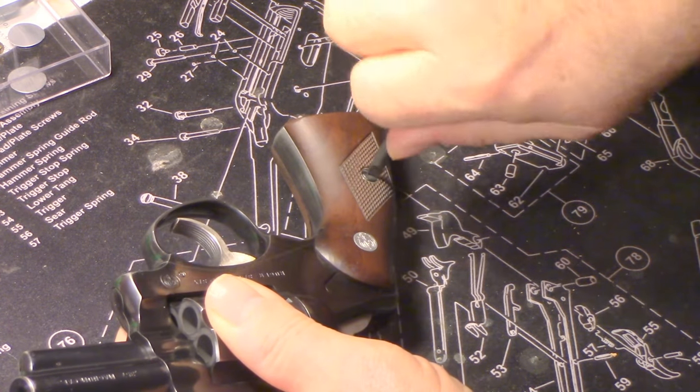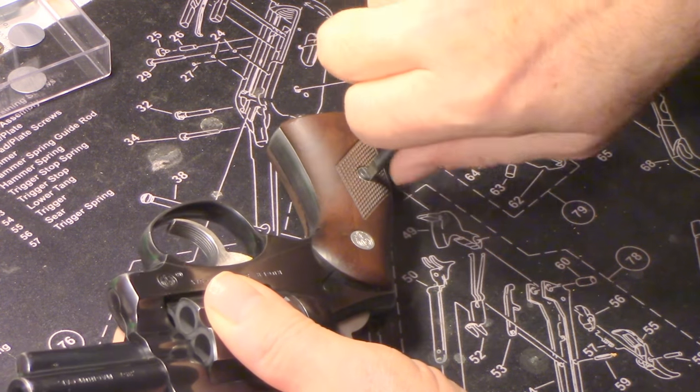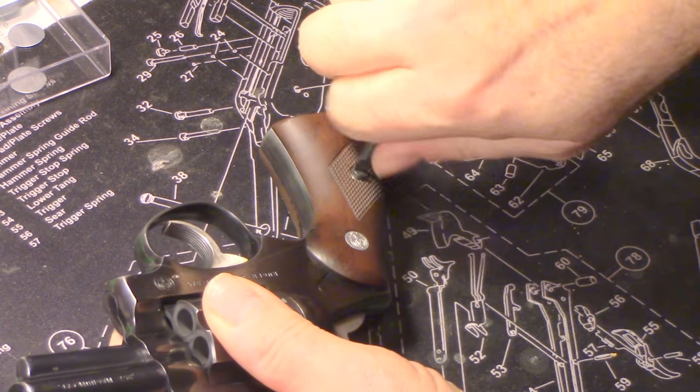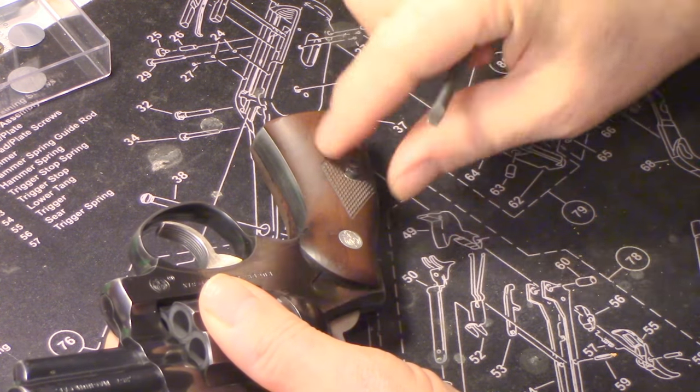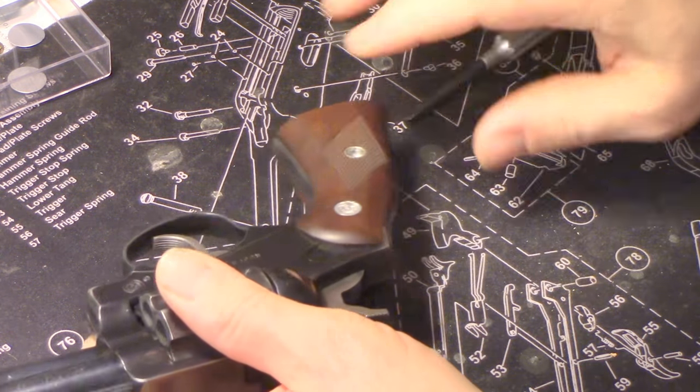You can actually do this with a dime, so this is the only tool required. The idea being that the Ruger Security 6 could be completely disassembled using just a dime in the field.